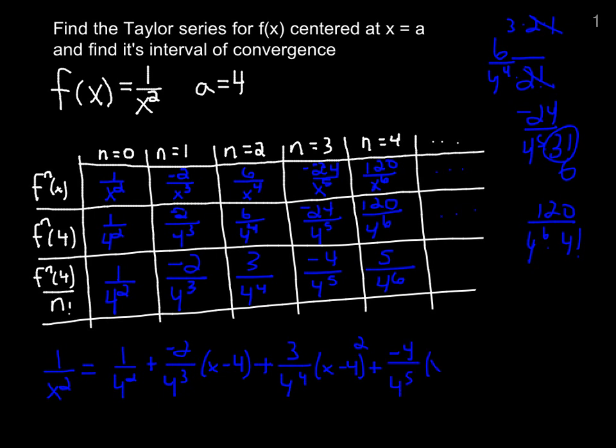Negative 4 over 4 to the 5th, and the reason why we don't simplify, we want to find a pattern, is our cube term. We have a 4th degree term, 5 over 4 to the 6th, and the pattern will continue.